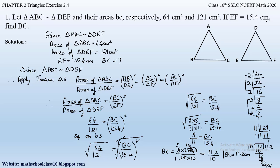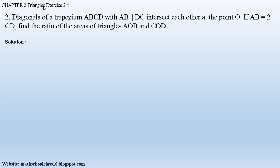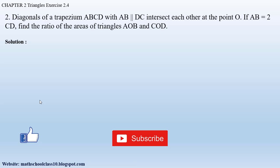So BC is equal to 11.2 centimeters. This is how we solve this problem. If you have any doubts, comment below. In my next video I'll be solving question number 2 from exercise 2.4, chapter 2, Triangles. Do like the video, subscribe to the channel, and hit the bell button for latest updates. Also watch the related videos of chapter 2 shown on screen. Thank you.